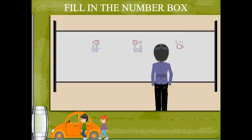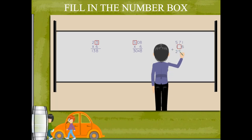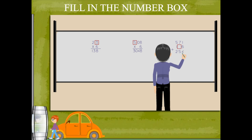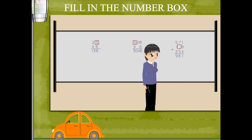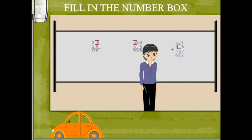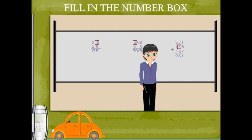The sum of 571 plus 1 blank 6 plus 254 is 961. Ma'am adds the addends and subtracts from the sum to get 3 in the blank space.